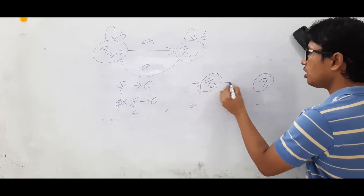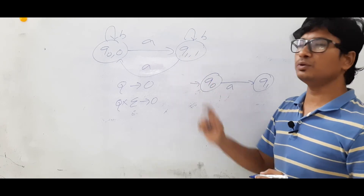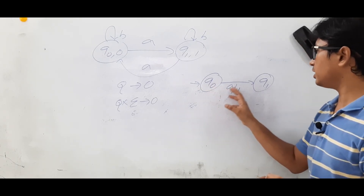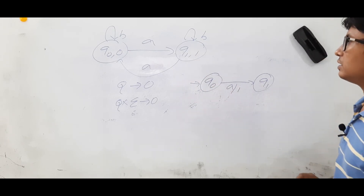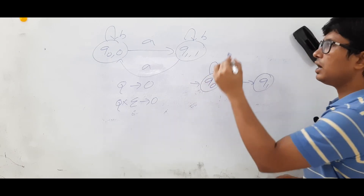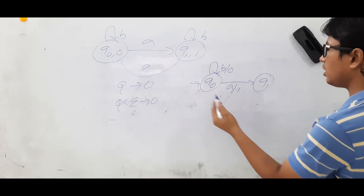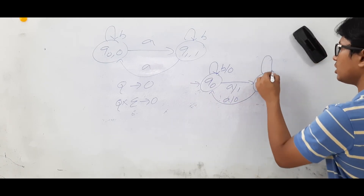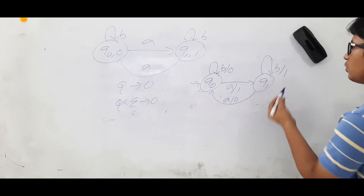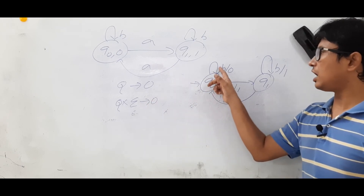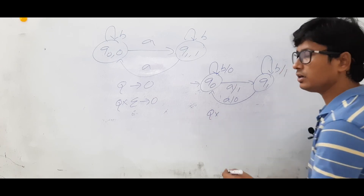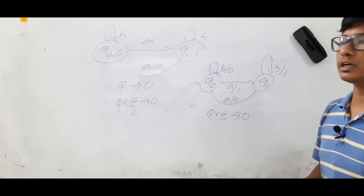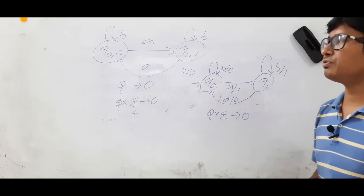So Q0 and Q1 are the two states. Now Q0 on A — where is it going? It is going to Q1, and what is the output you are getting? 1. So Q0 on A, you are going to Q1 and you are getting the output as 1. Now Q0 on B, you are going to Q0, and what is the output you are generating? 0. Now Q1 on A, you are going to Q0, and what is the output you are generating? 0. So Q1 on B, you are going to Q1, and what is the output you are generating? 1. So now from each state on an alphabet you have an output — Q on alphabet, you are getting some output. This is the equivalent Mealy machine for the given Moore machine.